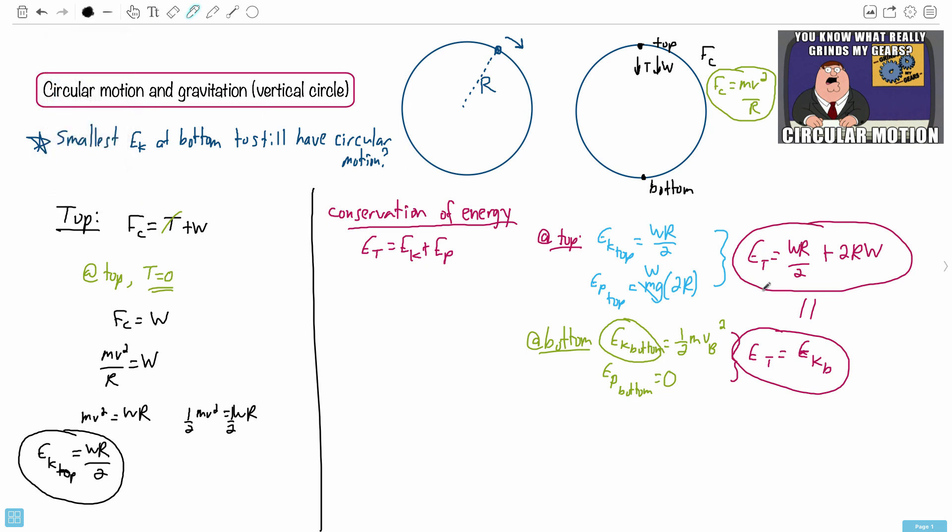We're going to take these two equal to each other. So we have EK_bottom, which is what we wanted, equals WR over 2 plus 2RW. I need to get them both over 2. So WR over 2 plus, to get 2RW over 2, multiply by 2, I get 4WR. Now I have 1WR plus 4WR, so that's why it equals 5WR over 2. Good lord, that was a lot of work. So finally, that's why the answer is D, 5WR over 2.